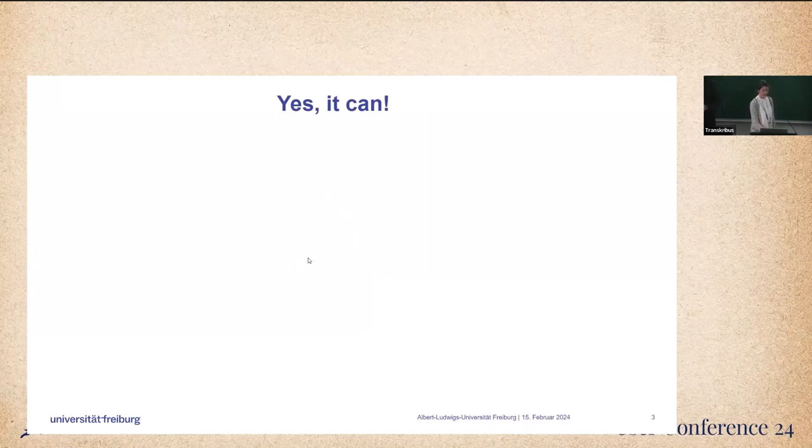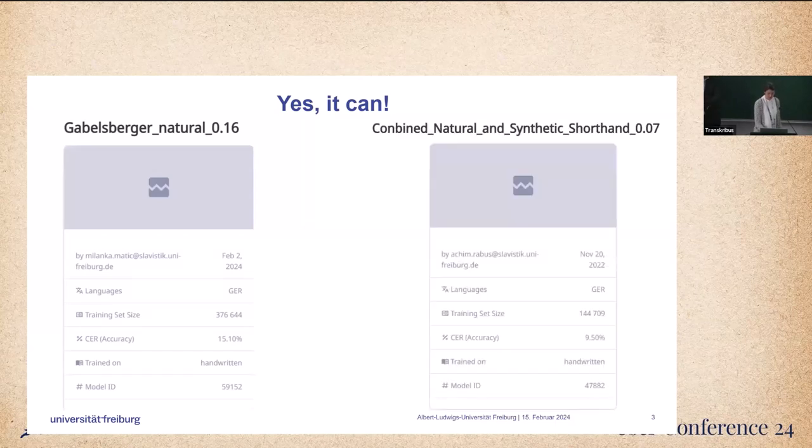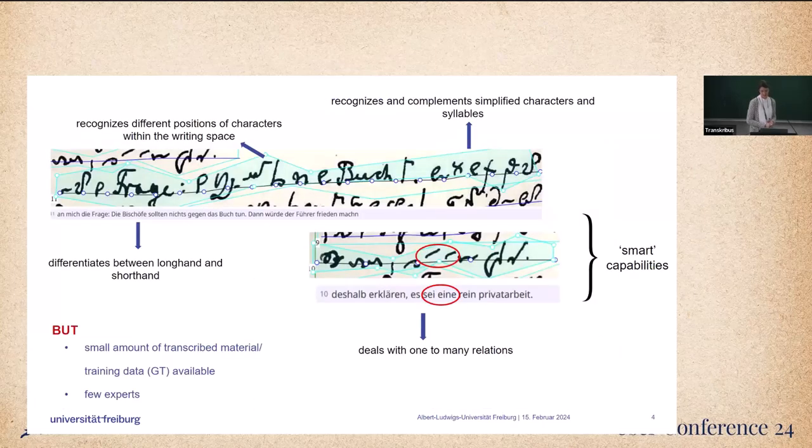Yes, it can. So we have to prove it. We've been able to train some promising models by now. You can see two examples here. It's still work in progress, but we can say that transcribers can prove its smart capabilities in this case. Here are some examples: it can differentiate between longhand and shorthand, it recognizes different positions of characters within the writing space, and so on.